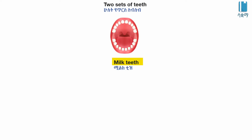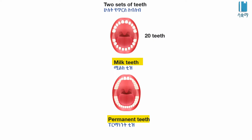There are two sets of teeth. The first set is the milk teeth, which we have as children. The second set is the permanent teeth, which replace the milk teeth.